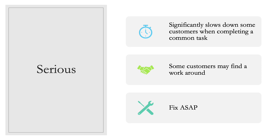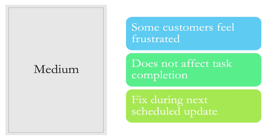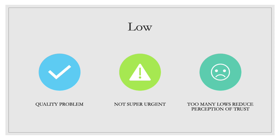The third severity rating is medium. These issues make some customers feel frustrated but don't affect task completion — they're things that can be fixed during the next already-scheduled update. The last severity rating is low — the least problematic things on the website, such as design and how things look. However, if you have too many low-severity issues on a website, it reduces the perception of trust. So if there are a lot of these things wrong, it becomes more important to fix them quickly.